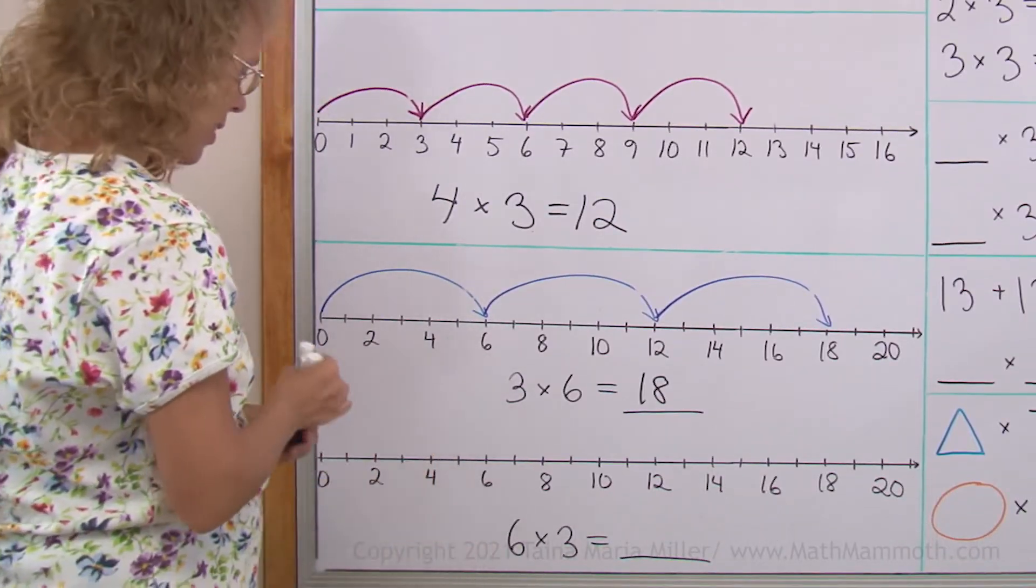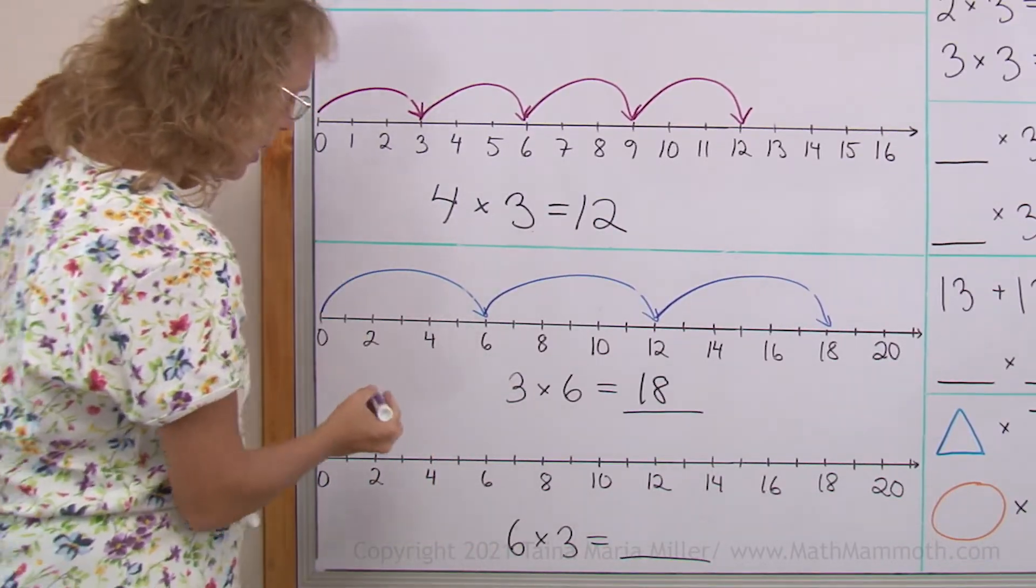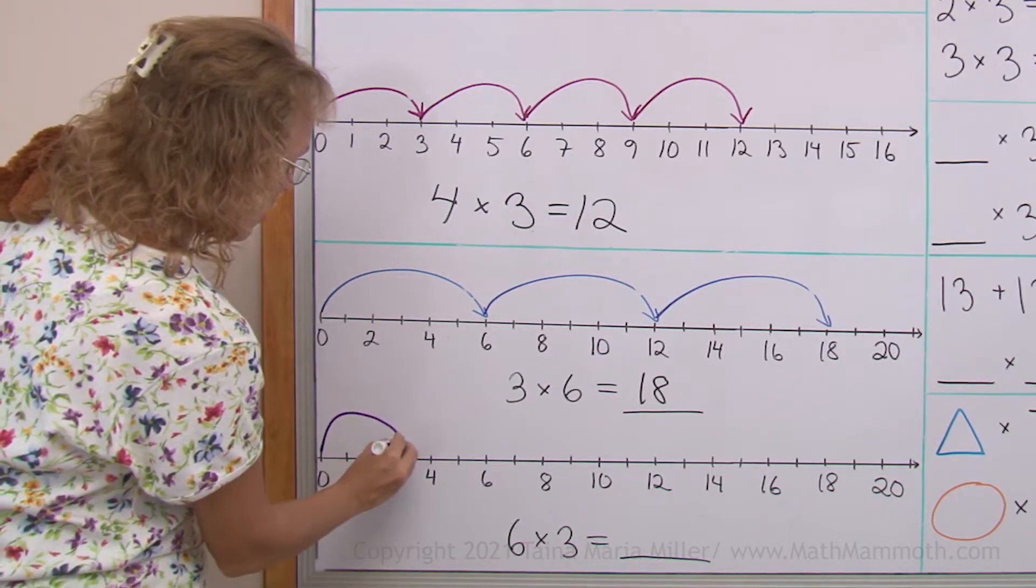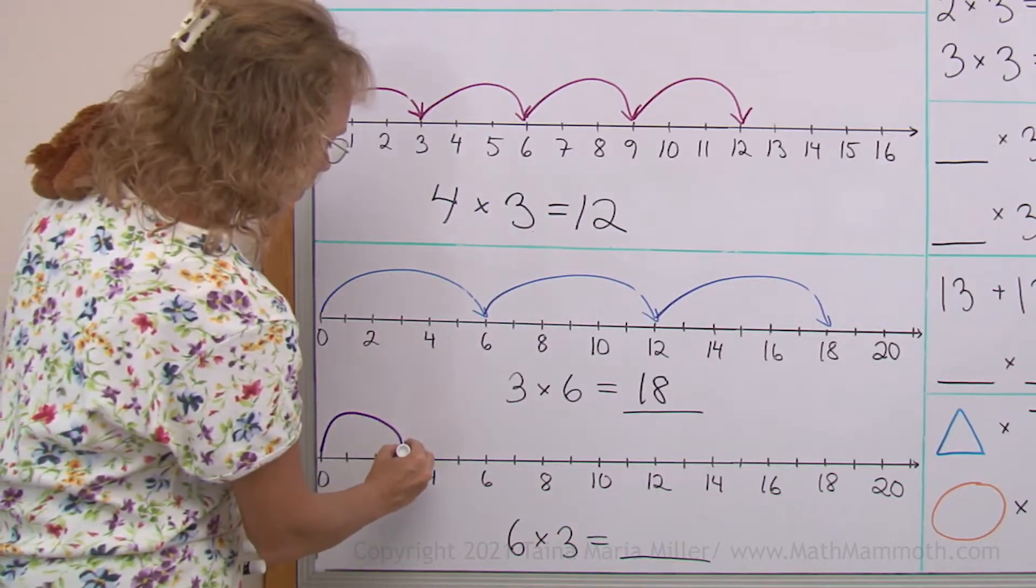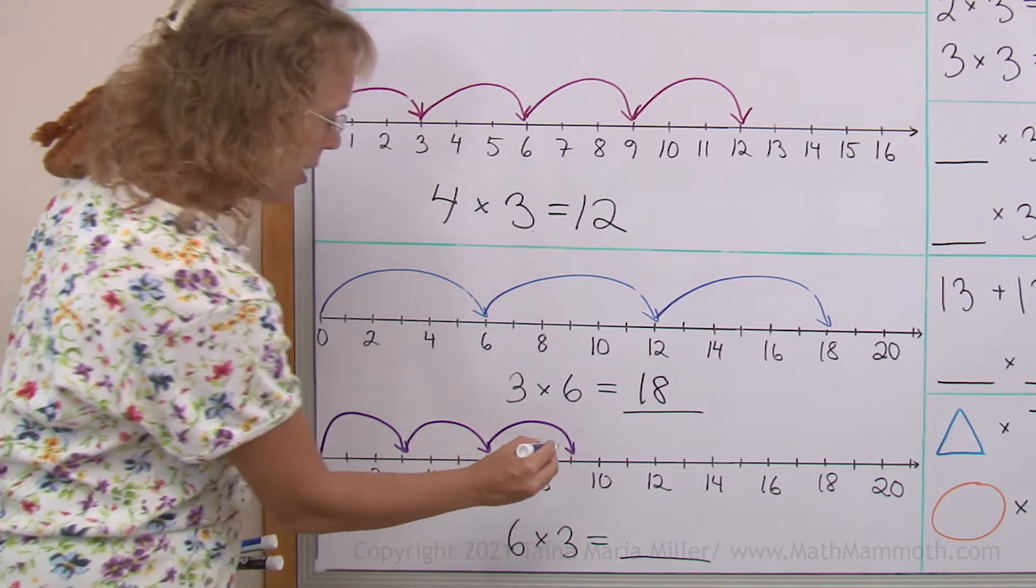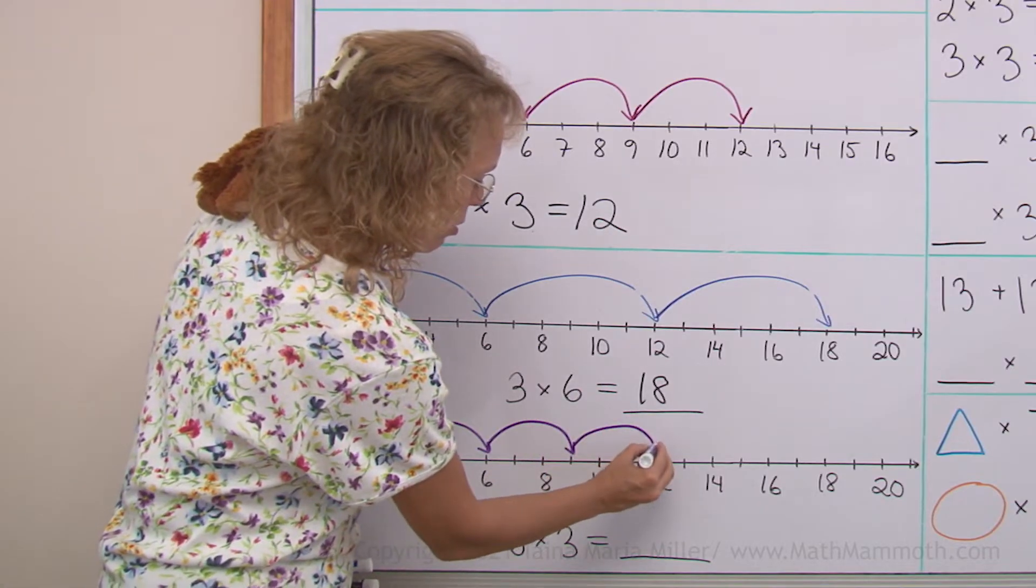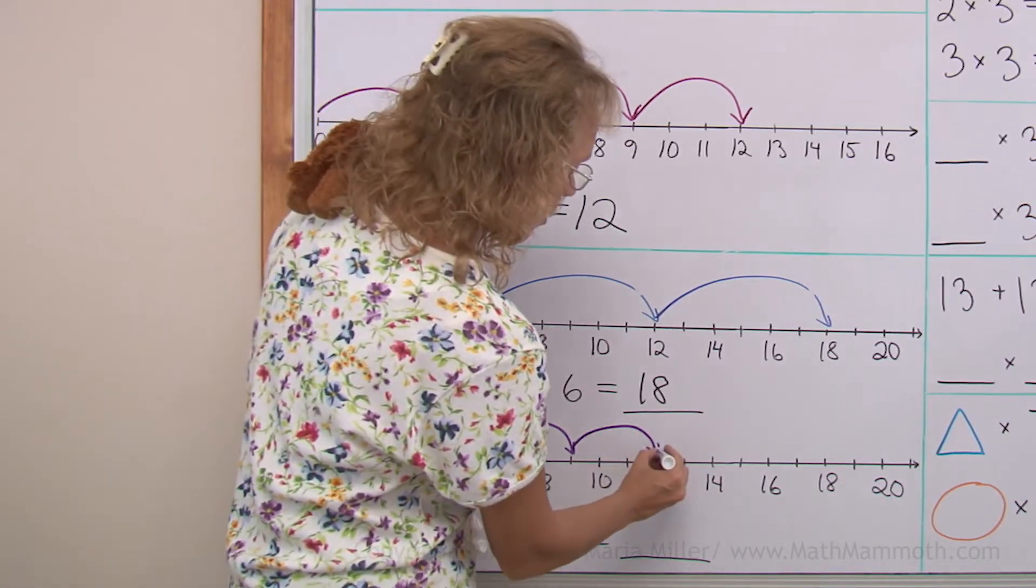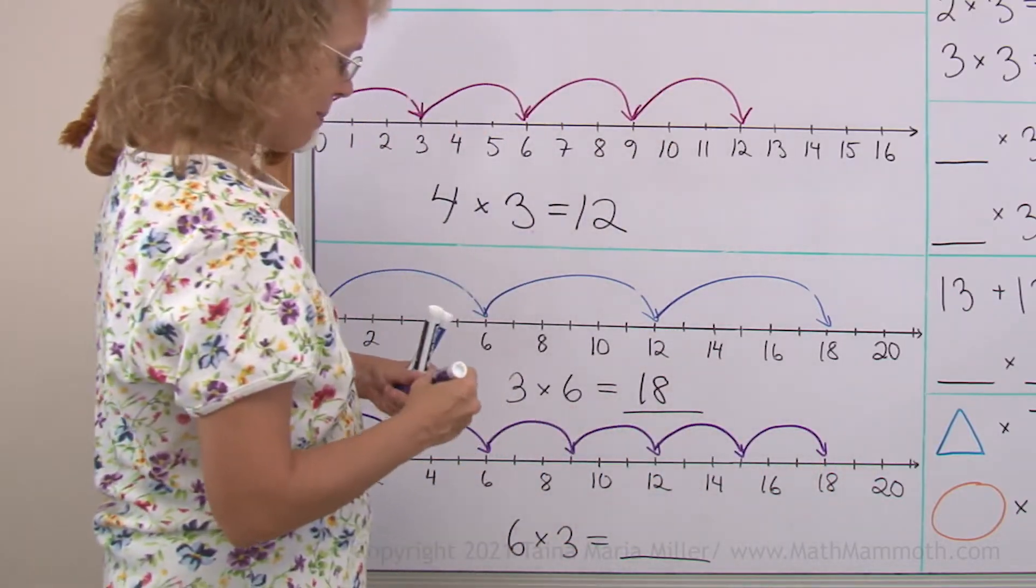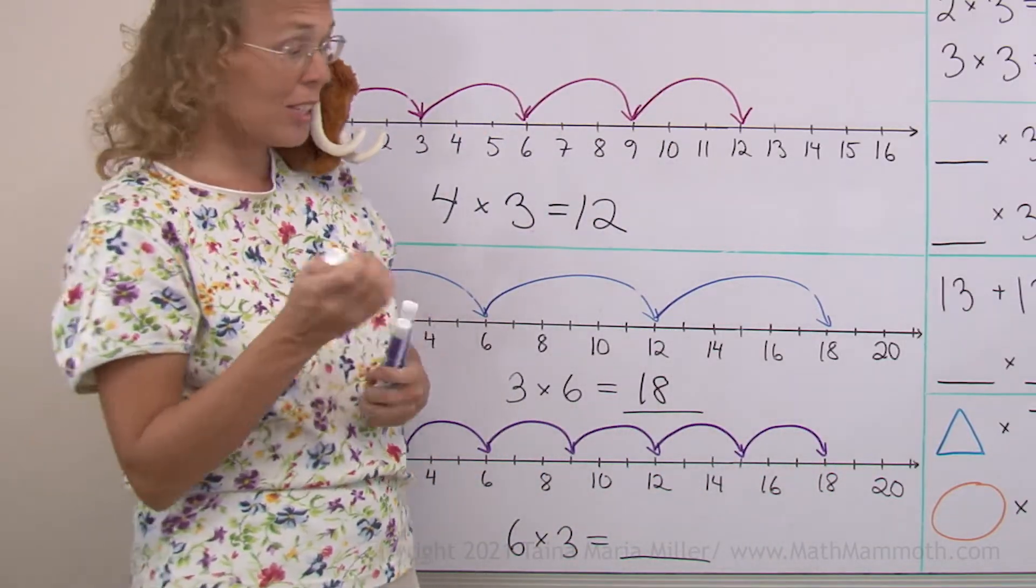Six times three. Now, I need to draw jumps of three. From the zero to three. And then three more would be to six. Then six, nine, then to twelve, and three more to fifteen, and then three more to eighteen. So six times three equals eighteen.